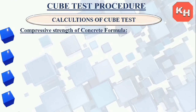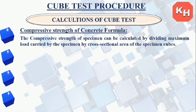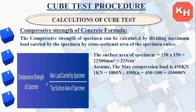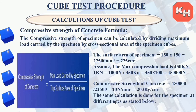The compressive strength of the specimen is calculated by dividing the maximum load carried by the specimen by the cross-sectional area: Compressive Strength = Maximum Load / Top Surface Area. The surface area is 150 × 150 = 22,500 mm² (225 cm²). Assuming a maximum compression load of 450 kN (450,000 N), compressive strength = 450,000 / 22,500 = 20 N/mm², which equals 203 kg/cm².